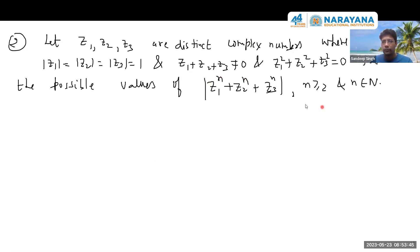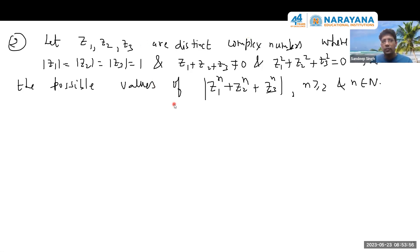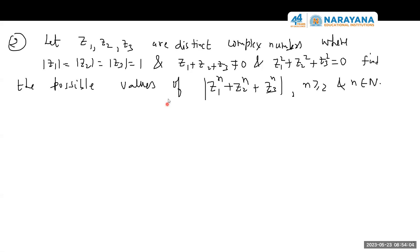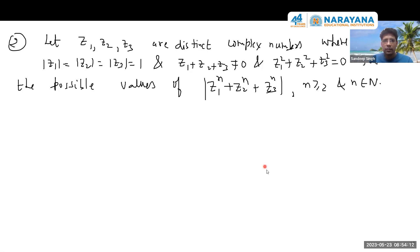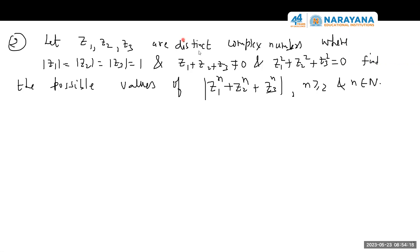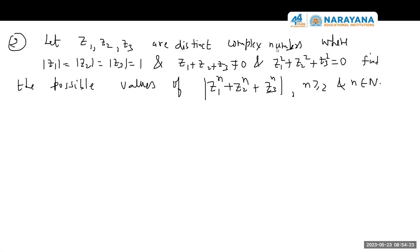A student got: for n equal to 4, the value is 0; for n equal to 6, it is 3. You need to find the exhaustive set of values. So far we have 0 and 3 as two possible values.